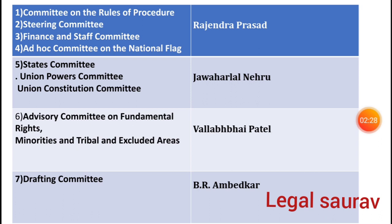Now let's see what committees were part of our Constituent Assembly and who headed them. The first committee was the Committee on the Rule of Procedure and Steering Committee. Second, Finance and Staff Committee. Third, Ad Hoc Committee on the National Flag — headed by Rajinder Prasad. The fifth committee covered State Committee, Union Power Committee, and Union Constitution Committee — headed by Jawaharlal Nehru. The sixth committee was the Advisory Committee on Fundamental Rights, Minorities, Tribals and Excluded Areas — headed by Vallabhbhai Patel.